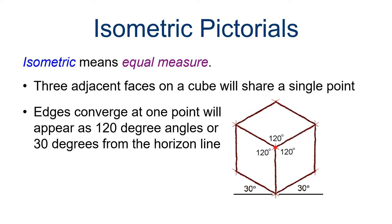Isometric pictorials means equal measures. Three adjacent faces on a cube will share a single point. Edges converge at one point or will appear as 120 degree angles or 30 degrees from the horizon line.